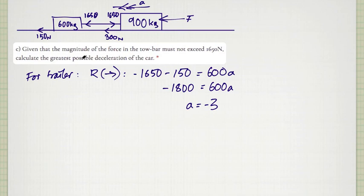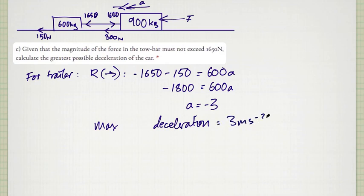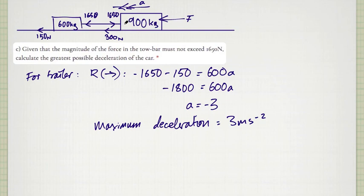The acceleration is minus 3, so the maximum deceleration is 3 meters per second squared. The reason there's a maximum is that the tow bar can't take a thrust force greater than 1650 newtons. If the car slows down too fast, the trailer could snap or break the bar. So the car cannot exceed this deceleration of 3 m/s² without damaging the tow bar.